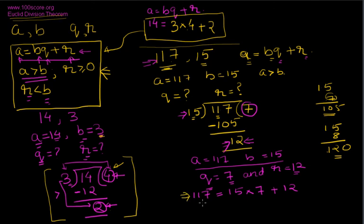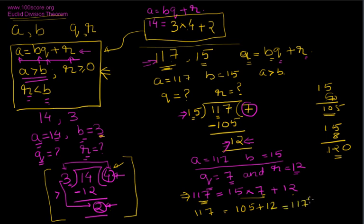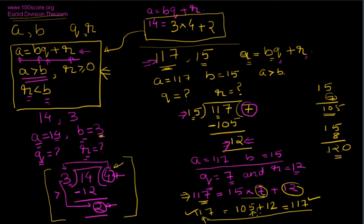You can also verify by checking left-hand side equals right-hand side: 15 times 7 is 105, plus 12 equals 117 — so left-hand side matches right-hand side, confirming that Q equals 7 and R equals 12 are correct. We just proved that any two numbers can be represented in this format, which is nothing but plain division: dividing A by B to get quotient and remainder.